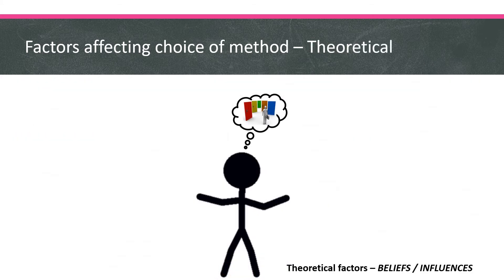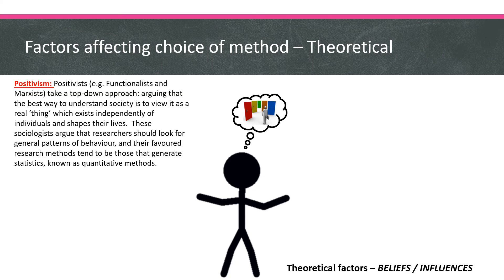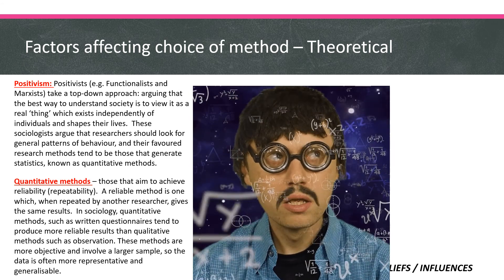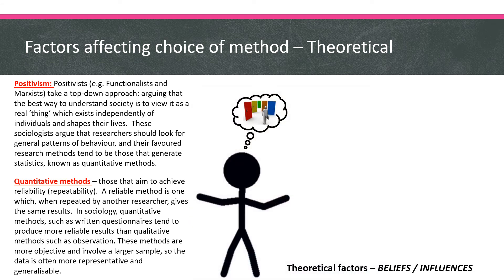Last but not least, we have our theoretical factors, broken down into four things. Positivism: positivists take a top-down, macro, structural view and look particularly at quantitative methods. They want numerical data, trends and patterns, observable facts. They like reliability from their methods — so this would be questionnaires, structured interviews, non-participant number-based or statistical observations where you're just tallying events, such as the Flanders model. This is what positivists prefer.